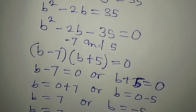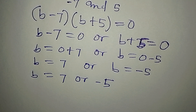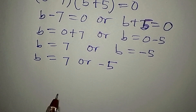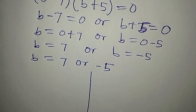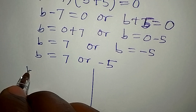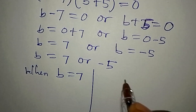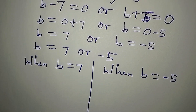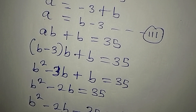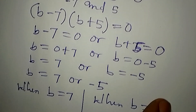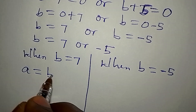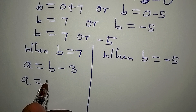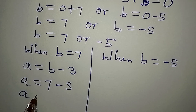We have our values of B, but remember this is a simultaneous equation with two unknowns A and B. To find A we consider two conditions — when B equals 7 and when B equals minus 5. Using equation 3, A equals B minus 3. When B equals 7, A equals 7 minus 3, so A equals 4.